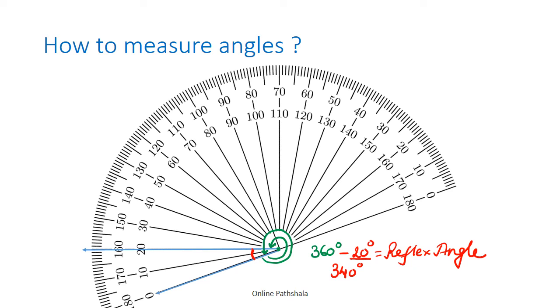You have to make sure that whenever you are resting your base on one of the arms, you always look at the scale which starts from zero. So here the internal scale is starting from zero, so I'm looking at 0, 10, and 20. This gives me my 20-degree angle.